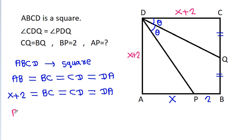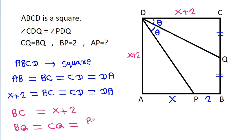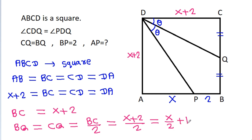We have BC equal to X plus 2, so BQ will be equal to CQ, which is BC divided by 2. That is X plus 2 over 2, equal to X over 2 plus 1. So BQ is X/2 plus 1 and CQ is X/2 plus 1.